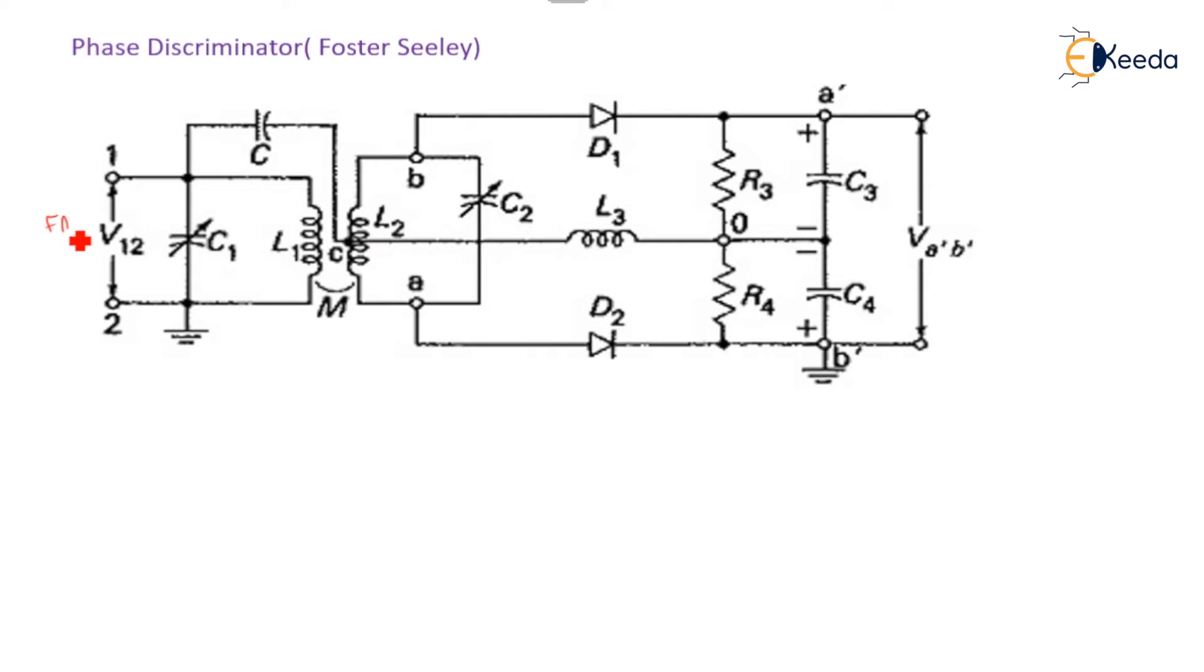Here FM is acting as the input. FM input is applied between terminal V1 and V2. So V1 is the FM input voltage. It is coupled through the tuned primary and secondary transformer.